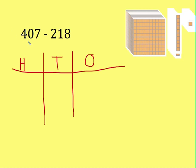Now which did you draw first? Did you draw your 407 or your 218? You should have drawn your 407. That's the larger number. You want to draw your total amount first.